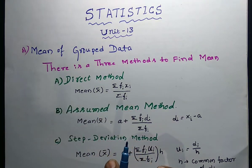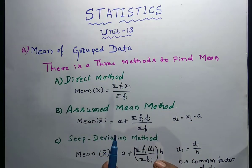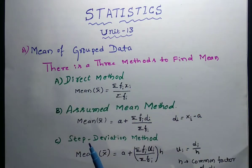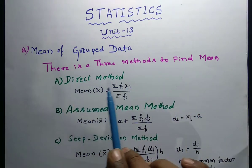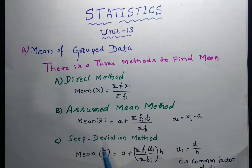Mean or average for grouped data — there are three methods to find the mean: one is the direct method, one is the assumed mean method, and the step deviation method.